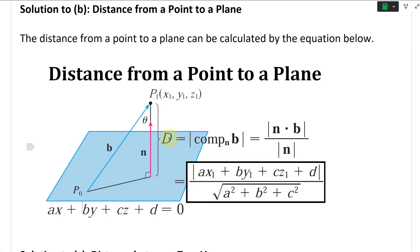And then D is the component of B projected onto n, which is going to be n dot B divided by the magnitude of n, or the length of this n vector. So that's this one, and there's a formula for the distance from a point to a plane.